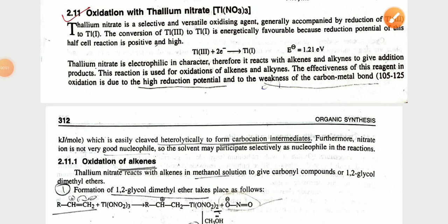Namaste, myself Dr. Monika Dravedi. Today's topic is oxidation by thallium nitrate. Thallium nitrate is a selective and versatile oxidizing agent. It generally accomplishes the reduction of thallium, specifically the conversion of thallium(III) to thallium(I).